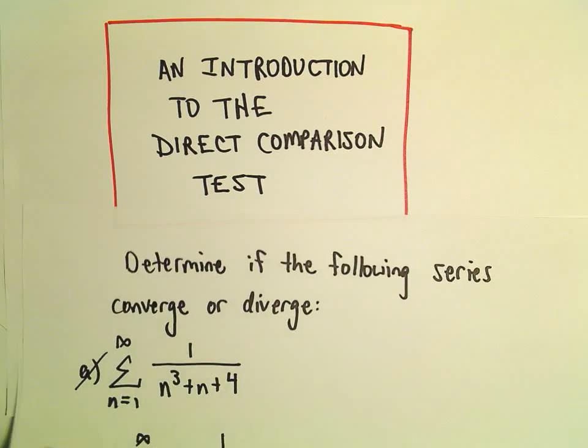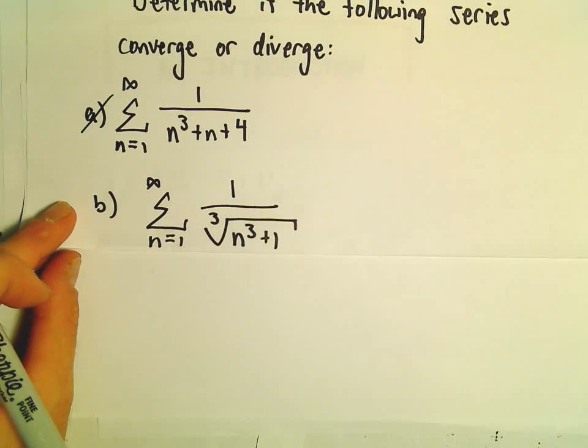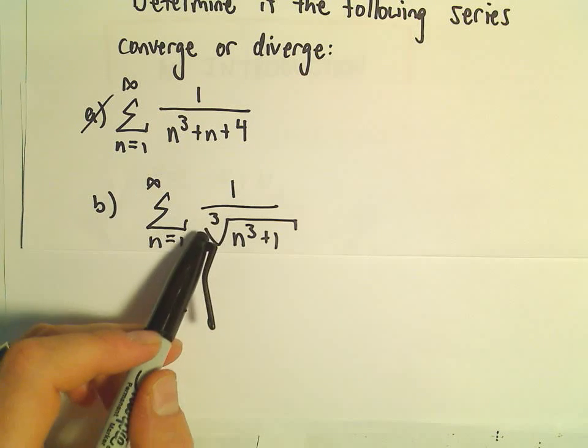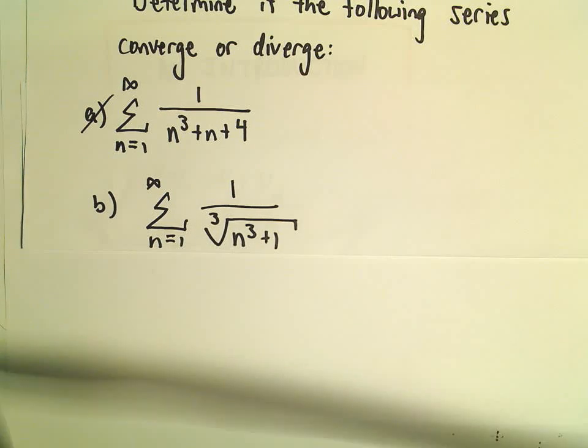Okay, so one more example here related to the direct comparison test. Here we've got the series n equals 1 to infinity of 1 over the cube root of n cubed plus 1.